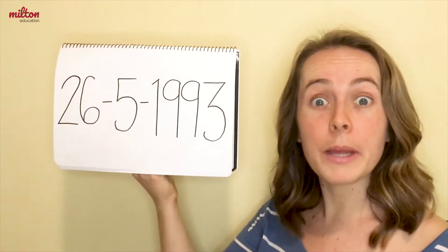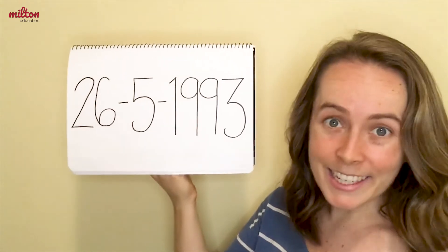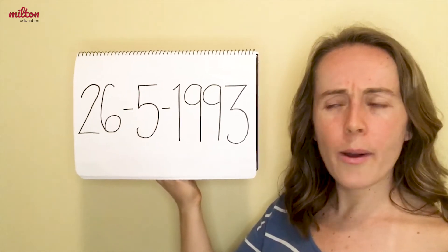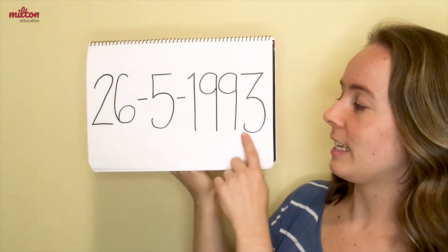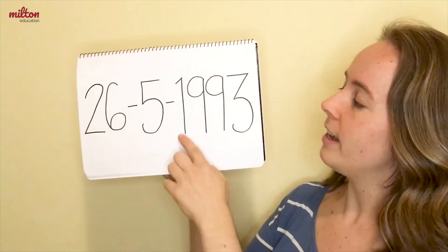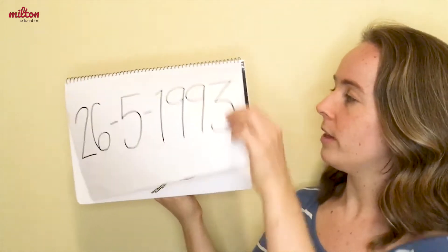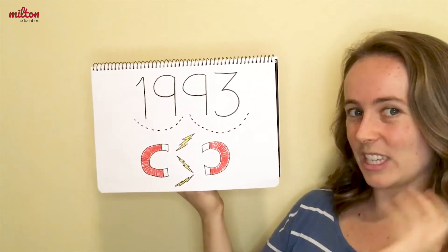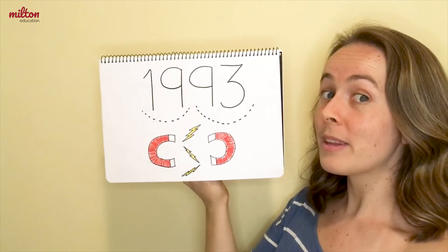Hi everyone, look here — I have some numbers. Do you know what these numbers are? They are a date, and not just any date — it's my birthday! Can you see what year I was born? I was born in the year 1993. Did you hear how I said 1993? This is the way that we say years in English. The numbers get into pairs and they repel each other like magnets, so they say their own name: 19, 93.